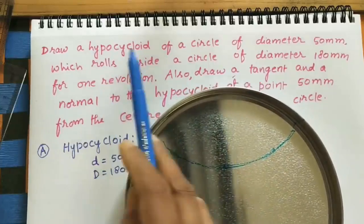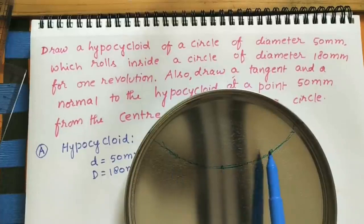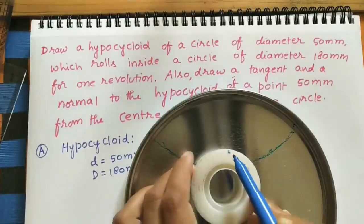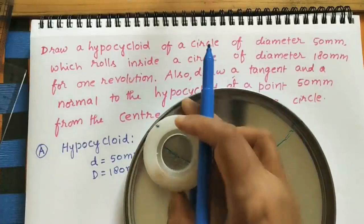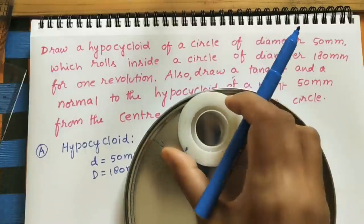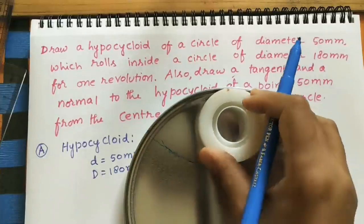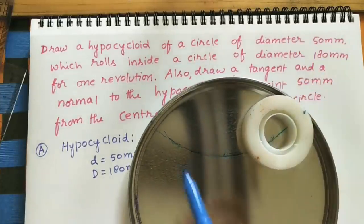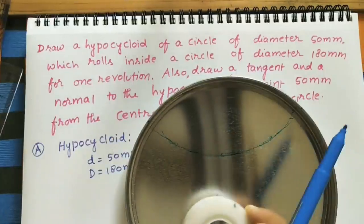So to define it formally: a hypocycloid is a curve traced out by a point on the circumference of a circle which rolls along the inside of another circle without slipping, making one complete rotation. This path is called the hypocycloid.